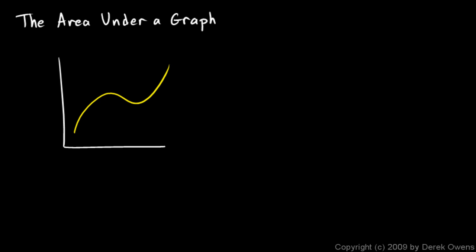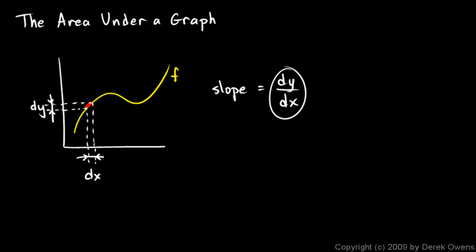The main point of first semester calculus was that if we have a graph of some function f, that function has a slope at any point. If we look at one little point on the graph and imagine a tiny segment, that segment has a certain change in x — an infinitely small change we call DX — and a corresponding change in y, which we call DY. Slope is rise over run, so the slope is DY over DX.